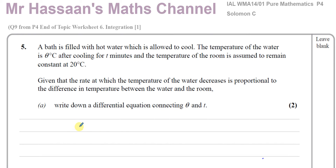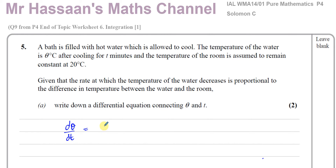So what I'm going to do here: the rate at which the temperature of the water decreases — the rate of decrease of temperature — means with respect to time. θ is the temperature and T is the time. So what they're telling us is dθ/dt, the rate of change of temperature, is proportional to the difference in temperature between the water and the room. So there's going to be a constant.